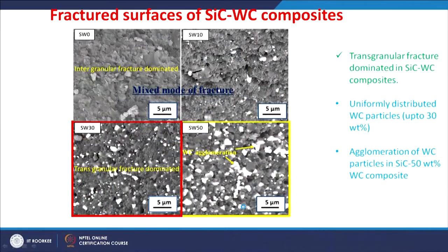These composites were prepared with a change in tungsten carbide content from 0 to 58%. SW0 means silicon carbide without any tungsten carbide, SW10 means silicon carbide with 10 weight percent tungsten carbide, SW30 means silicon carbide with 30 weight percent tungsten carbide, and SW50 means silicon carbide with 50 weight percent tungsten carbide. These composites were prepared by hot pressing.